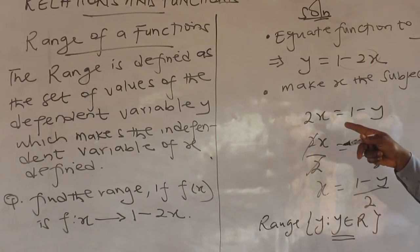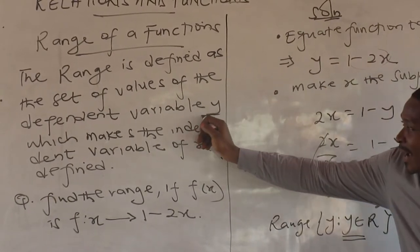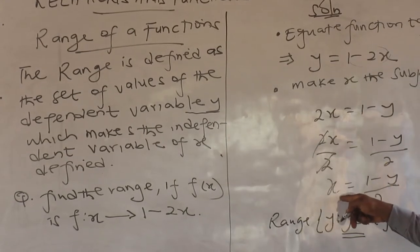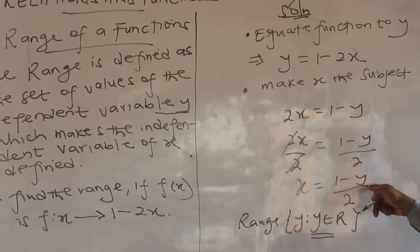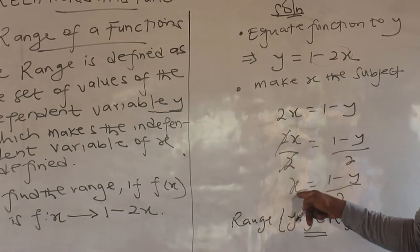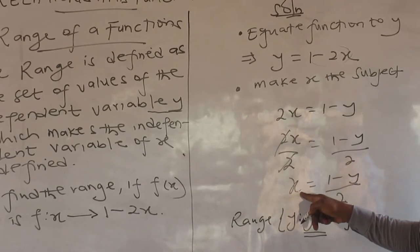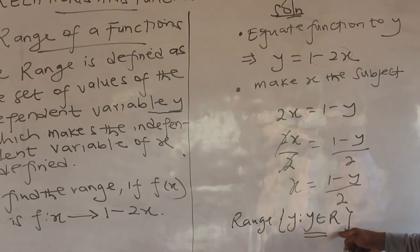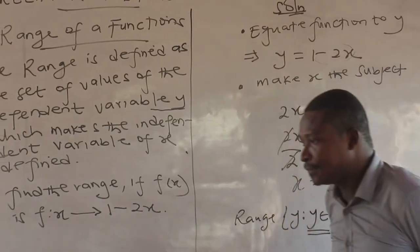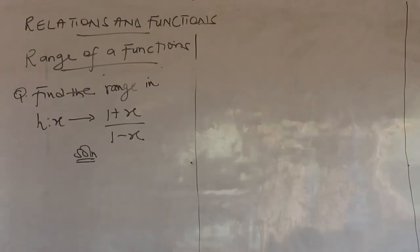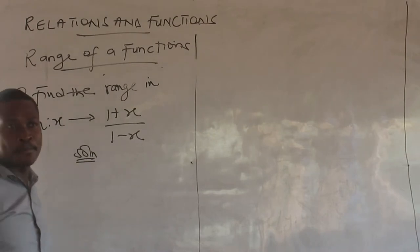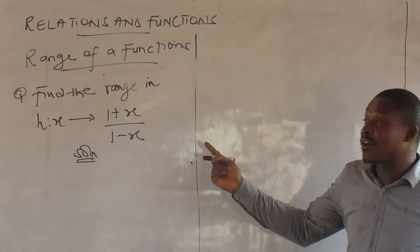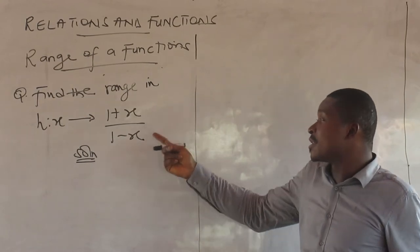Why did I define the range in terms of y and not x? Because the range is the set of values of the dependent variable y which will make x defined. It is the value of y which could cause a problem. The range is defined in terms of y.